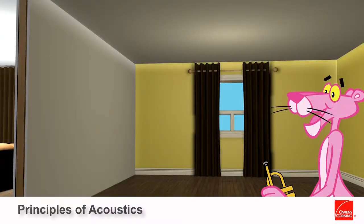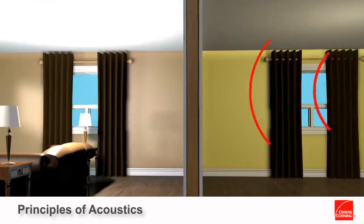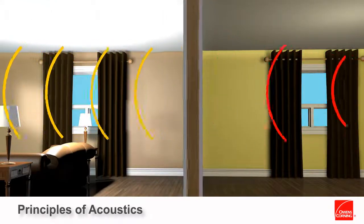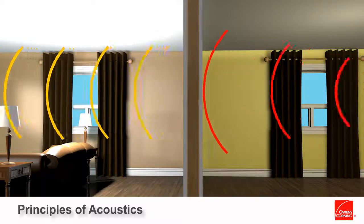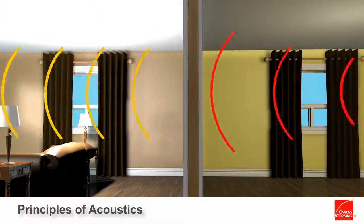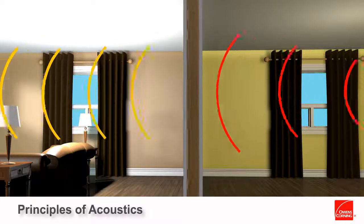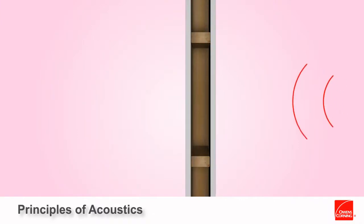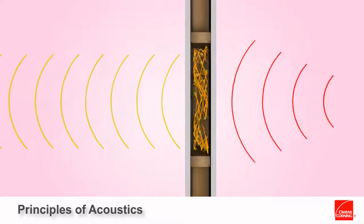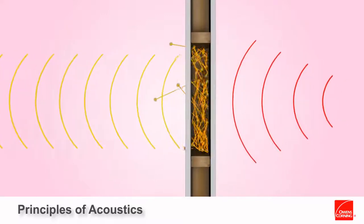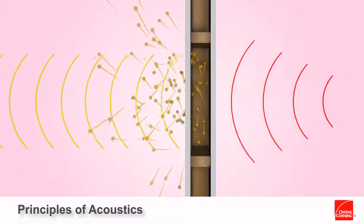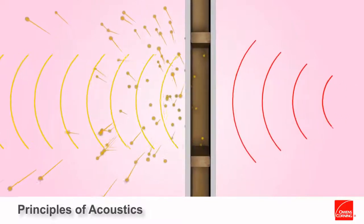Sound waves emanating from the noise source strike the gypsum layer, which begins to vibrate much like a drum. The structural vibrations of walls, floors and ceilings are easily transferred across any rigid connection — in this case, the wood studs. Once the sound has passed through the rigid connection, it will radiate on the side opposite the source room. If the cavities are not insulated, airborne sound easily reverberates within the empty cavity and is transmitted to the adjacent gypsum board on the opposite side of the wall. A major weak link in most partitions is the rigid connections, which facilitate a direct vibrational path over which sound vibrations can travel readily.